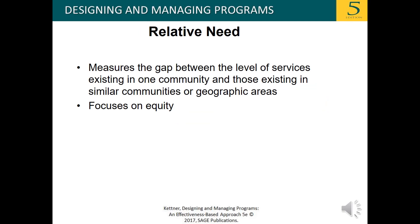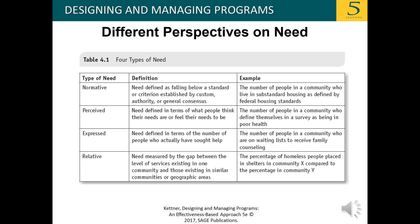Relative need measures the gap between the level of services existing in one community and those in similar communities or geographic areas, focusing on equity. To illustrate examples of all four: normative need — the number of people in a community living in substandard housing as defined by federal housing standards; perceived need — the number of people who define themselves in a survey as being in poor health; expressed need — the number of people on waiting lists to receive family counseling; relative need — the percentage of homeless people placed in shelters in community X compared to community Y.